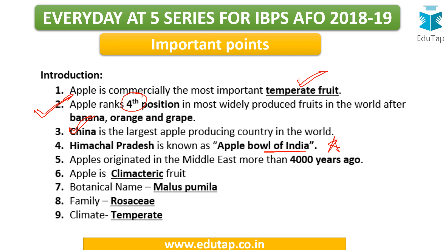Apple is a climatic fruit — it keeps ripening even after you harvest it. Based on the mode of ripening, fruits can be climatic or non-climatic. Climatic fruits keep ripening even after they are harvested; non-climatic fruits stop ripening once they are harvested. The botanical name of apple is Malus pumila — keep this in mind as options may include it. Apple belongs to the family Rosaceae, and the climate required is temperate.